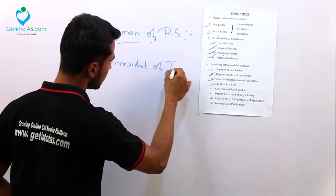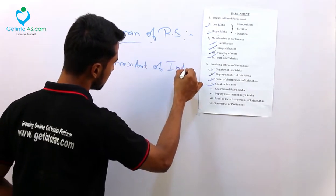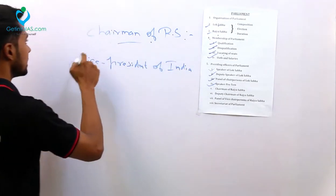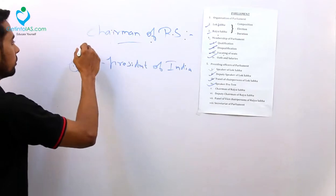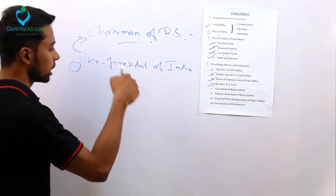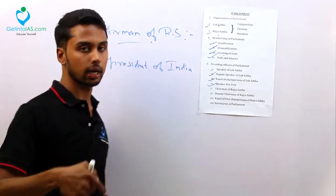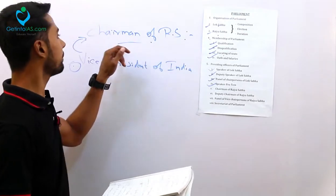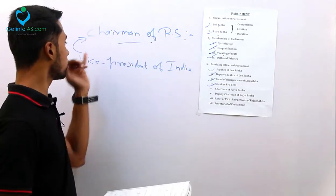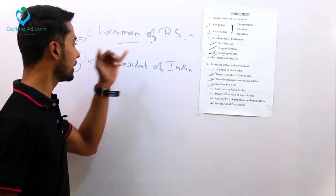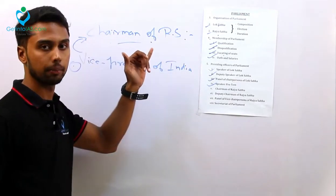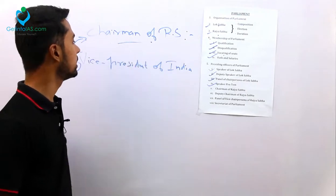The Vice President of India is the ex-officio Chairman of Rajya Sabha. So whoever is the Vice President of India at that time will be the Chairman of Rajya Sabha. That is very clear.